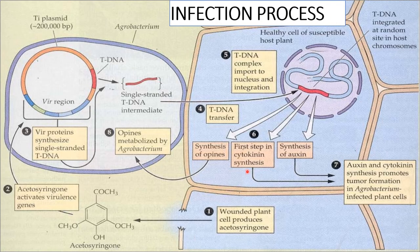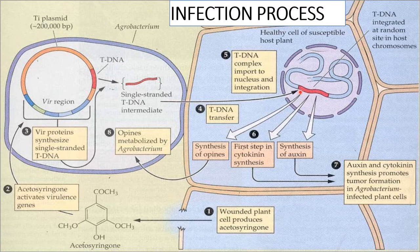In the infection process, first the wounded plant cell produces acetosyringone. The acetosyringone is detected by the vir gene, which helps in removing the T-DNA from the Ti plasmid. This single-stranded T-DNA enters inside the plant cell, where it moves from the cytosol into the nucleus of the plant cell, and there it integrates itself into the DNA or genome of the host cell.